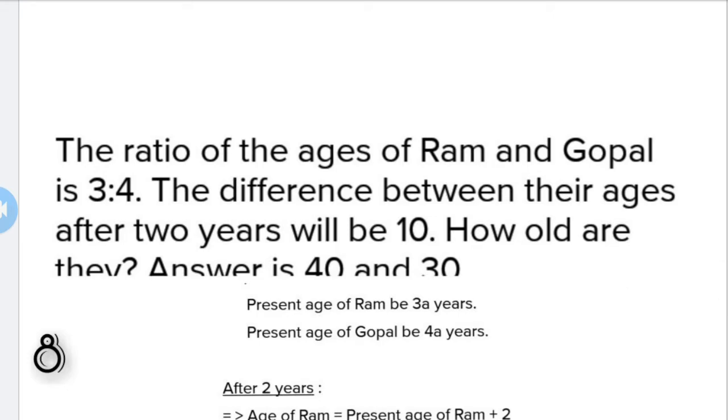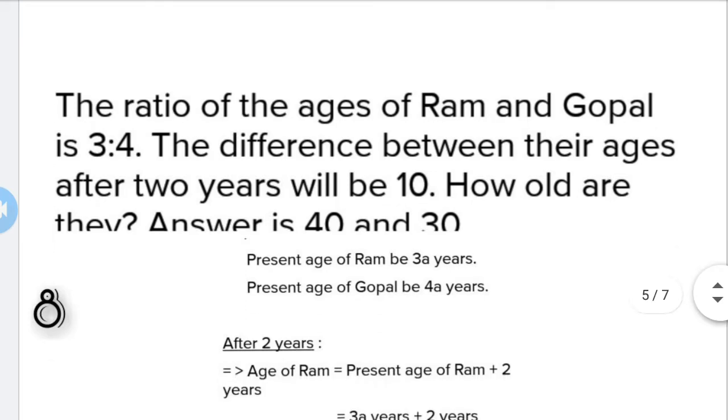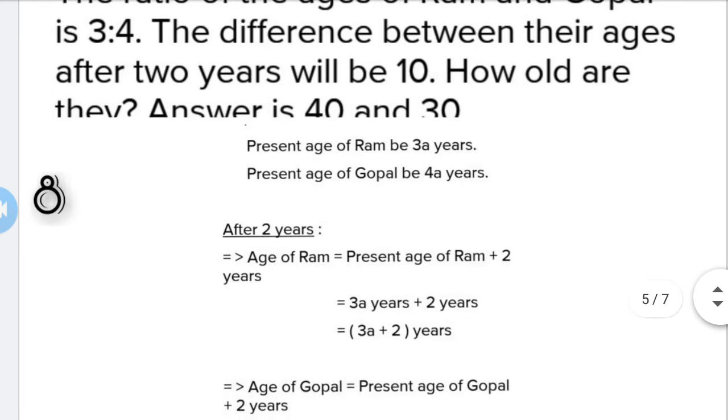Our next question is that the ratio of age of Ram and Gopal is 3 to 4. The difference between their age after 2 years will be 10. How old are they now? What is their present age? We will discuss this question and understand the concept.